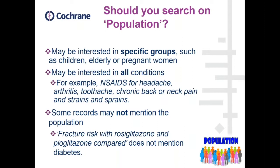The review I'm referring to is one on glitazones for diabetes and fracture risk. Not all the included studies actually mentioned diabetes. For example, we had one relevant paper entitled 'Fracture risk with rosiglitazone and pioglitazone compared,' but it didn't actually mention the term diabetes in the title, abstract, or indexing. It was just assumed they meant diabetes because that's the main condition for glitazones, but we wouldn't have retrieved it if we'd limited our search to diabetes.